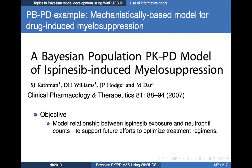The next example carries the Bayesian component through into pharmacodynamics — a physiologically-based pharmacodynamic example: a mechanistically-based model for drug-induced myelosuppression. This is a Bayesian population PKPD model for ispinisib-induced myelosuppression, published by a group at GSK. The objective was to model the relationship between ispinisib exposure and neutrophil counts, with the aim of using that model to support optimization of treatment regimens.